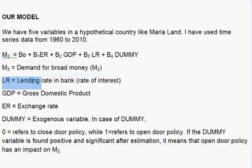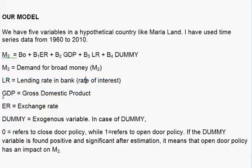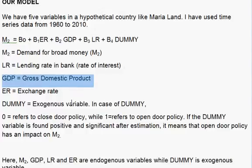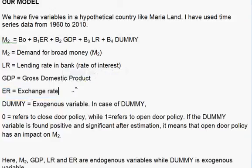LR is the lending rate in bank. GDP is gross domestic product. ER is the exchange rate. And dummy is the exogenous variable.